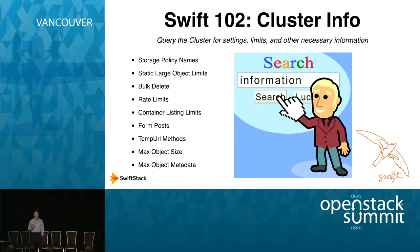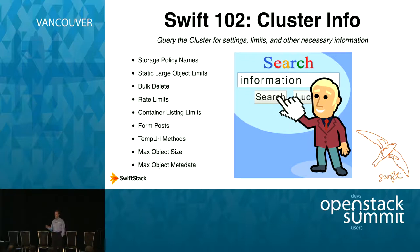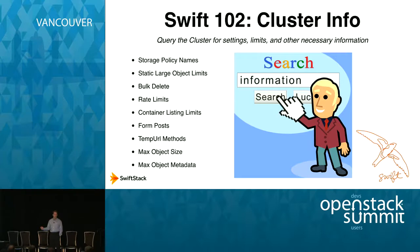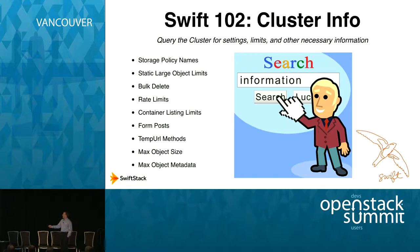One question I get asked all the time is: Swift has all these great features — temporal URLs, form posts, and other things that Swift can do — but they're set up by your Swift admin. If you're a developer or end user, how do you know what your admin has enabled? How do you know the max size of an object, or the names of storage policies? There's another piece of middleware that ships by default in OpenStack Swift called Info.